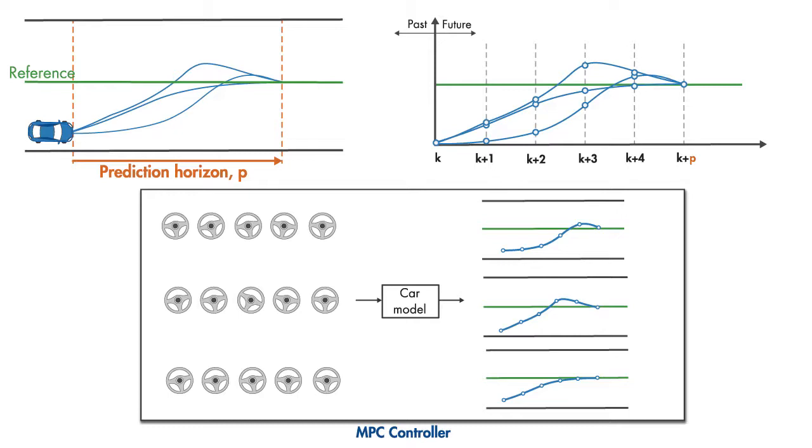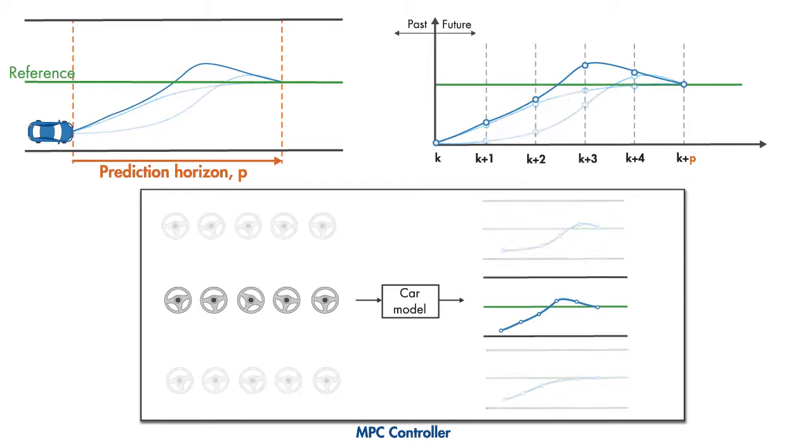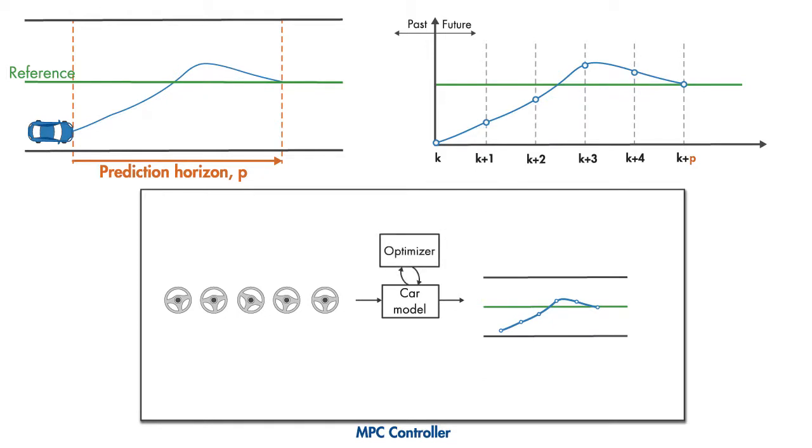Instead, it does it in a systematic way. And this is where the optimizer comes into the picture. By solving an online optimization problem, the MPC controller tries to minimize the error between the reference and predicted path of the car.